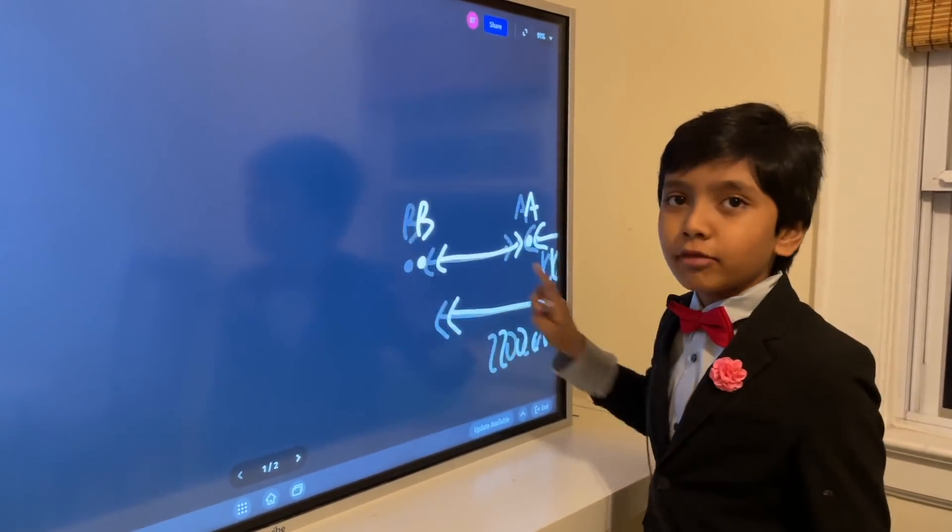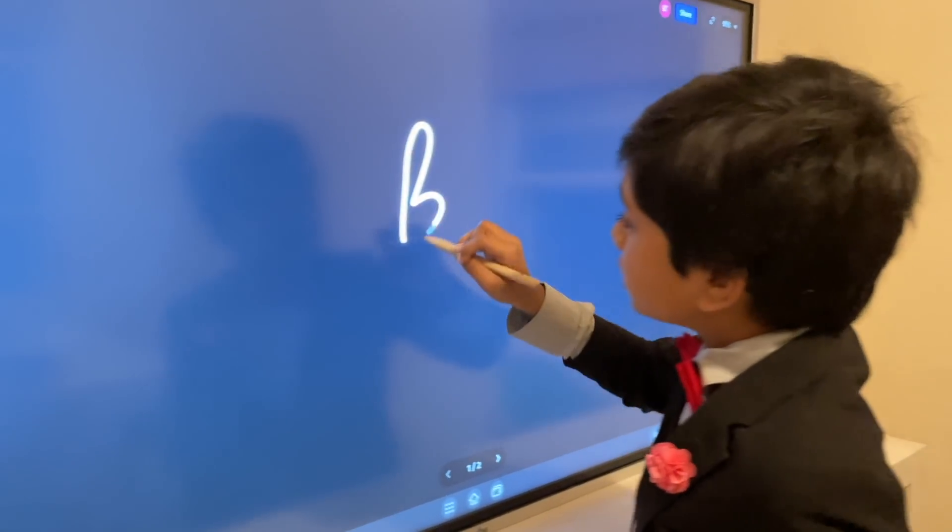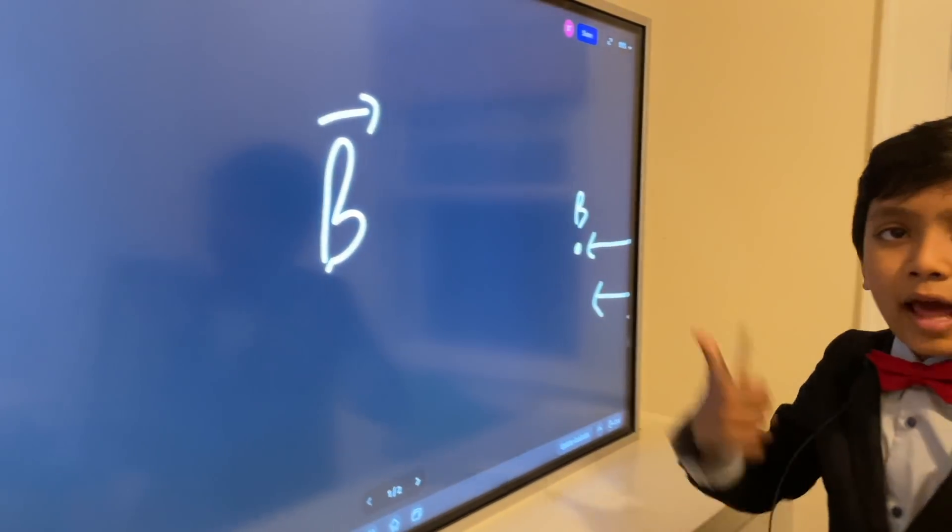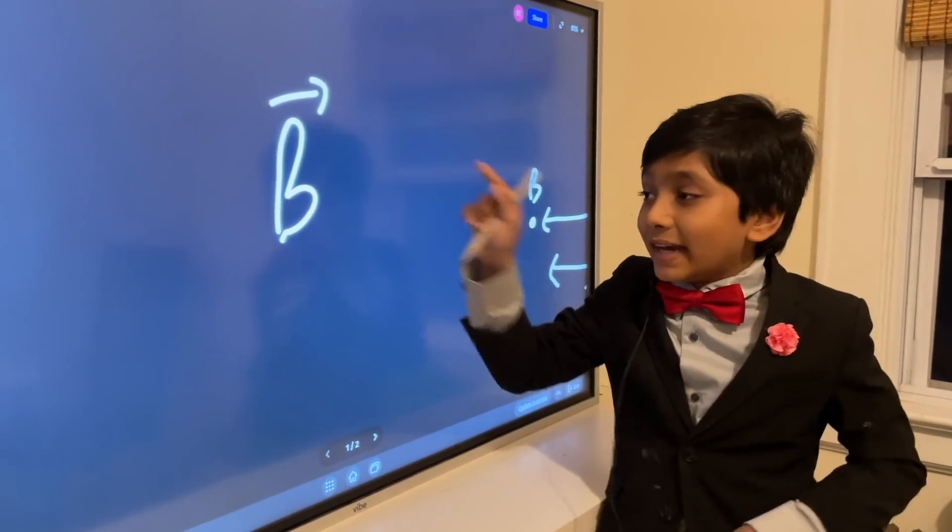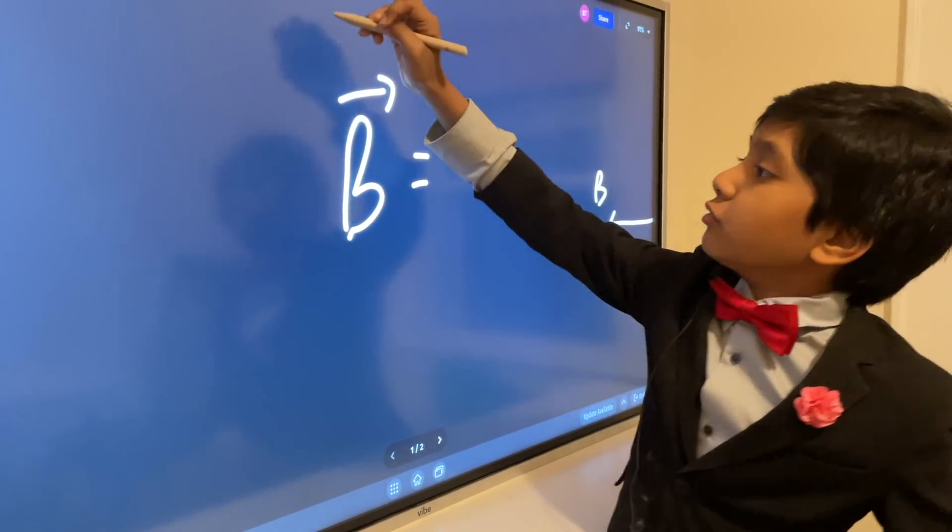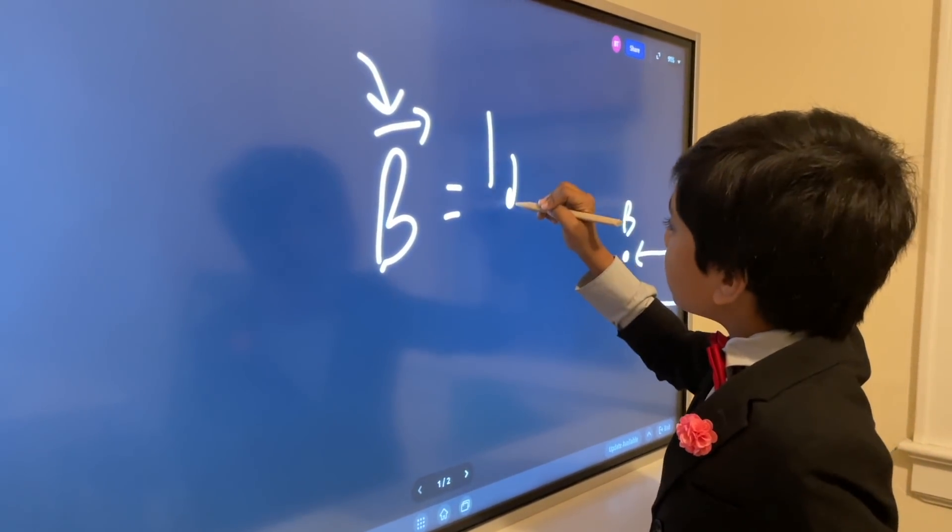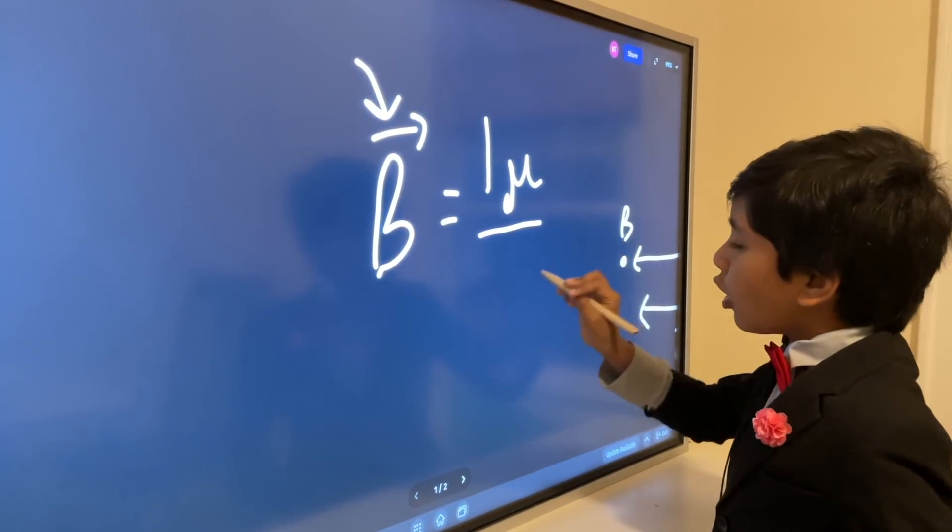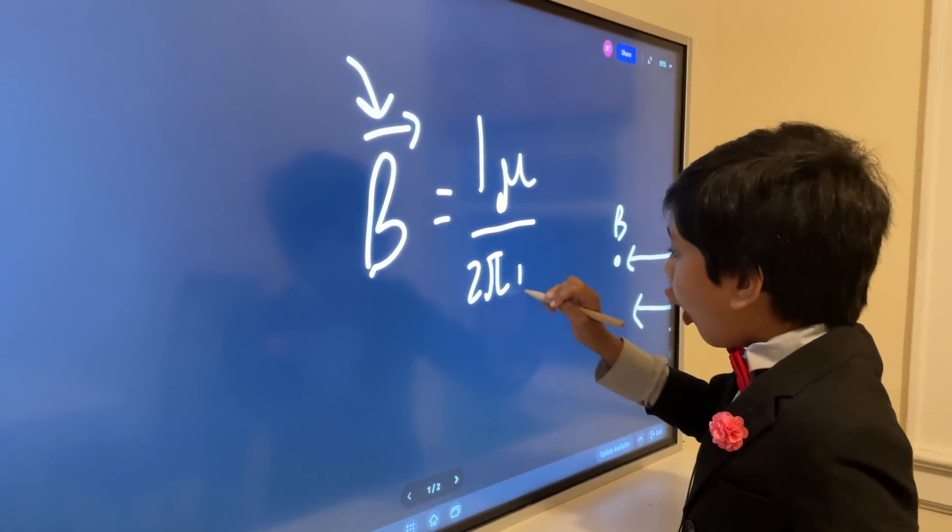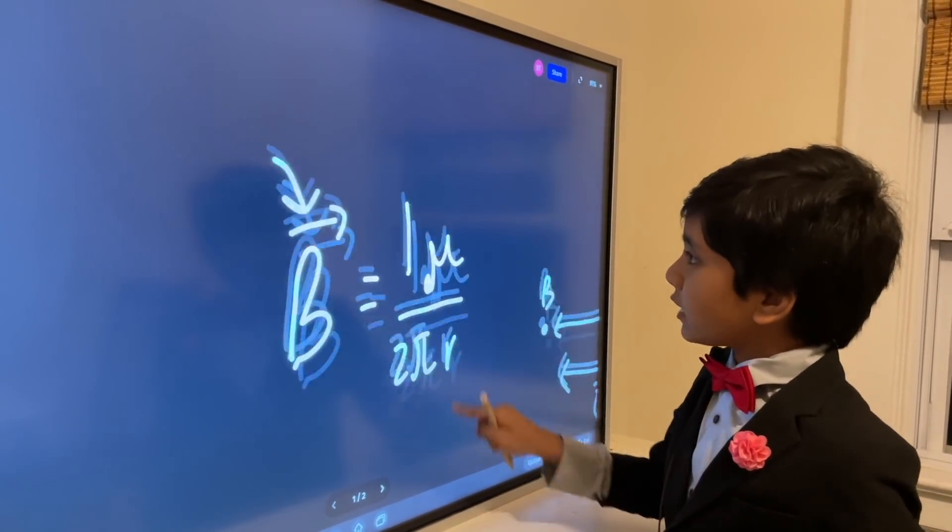So we need to use the equation that we erased before. What was that? Well, it was B, not that point. We instead want the magnetic field thing B, which is a vector, you can tell by this arrow. And then you have I mu, kind of hard to draw, then 2 pi r. That is our equation, and now let's plug everything in.